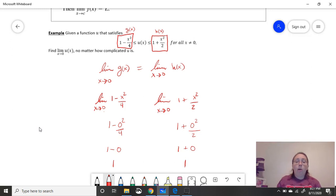So the function that bounds our u below and our function that bounds u above, they both approach a limit and they're equal to each other. So that means by the Sandwich Theorem, or the Squeeze Theorem, or the Pinching Theorem, the limit as x approaches 0 for our function, which is stuck in between these two, has to also go to 1.